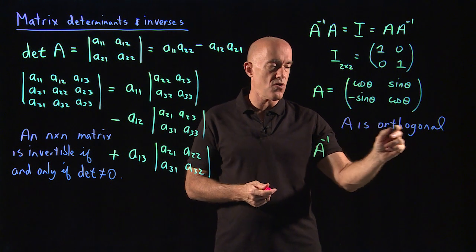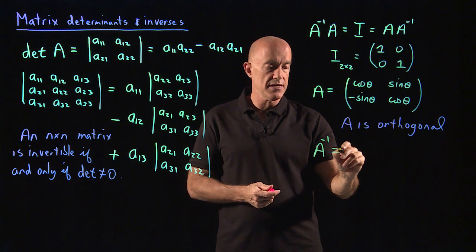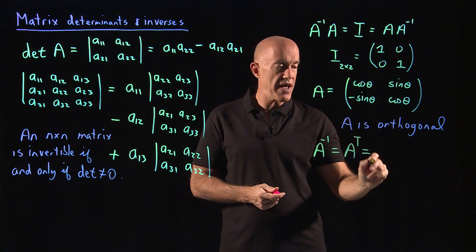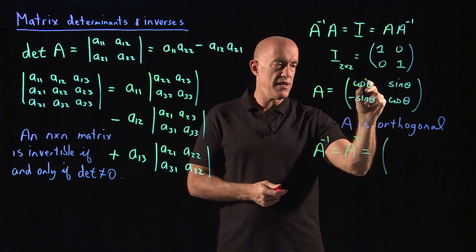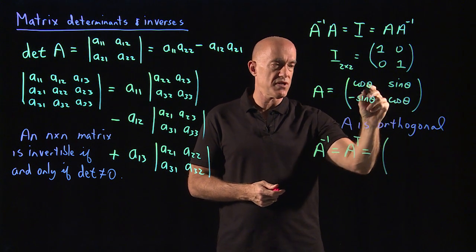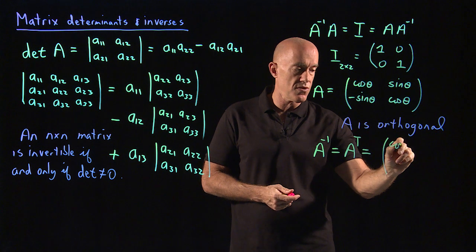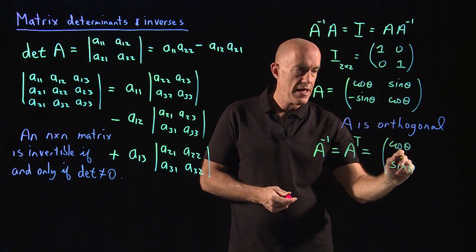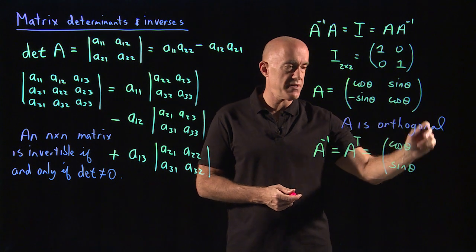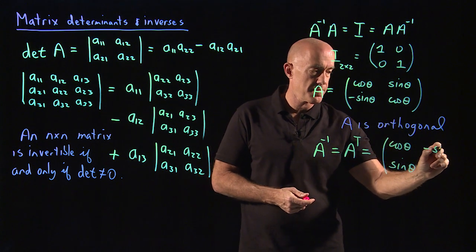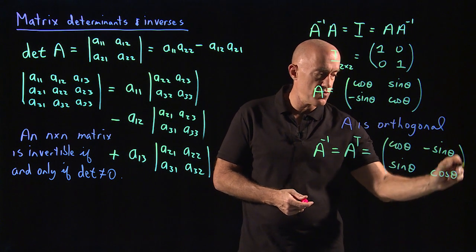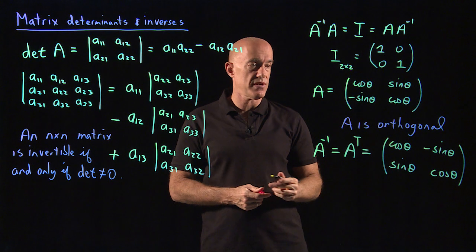Here, the inverse matrix of an orthogonal matrix is equal to the transpose of the matrix. The transpose means that the first row of the matrix becomes the first column, so the first row becomes the first column, and the second row of the matrix becomes the second column. So if we interchange rows and columns, then we take the transpose of the matrix.